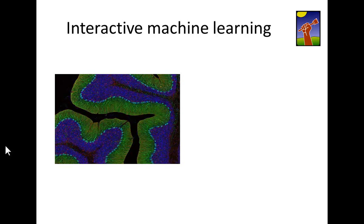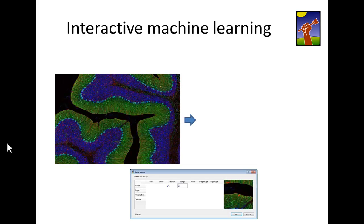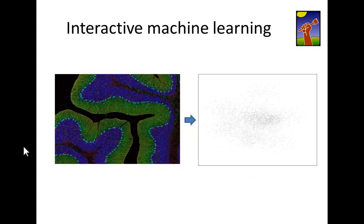Now I want to give you an intuition for how the interactive machine learning works. Features can be selected by the user and they are computed for each and every pixel in the image. So every pixel in the image is mapped to one point in feature space.